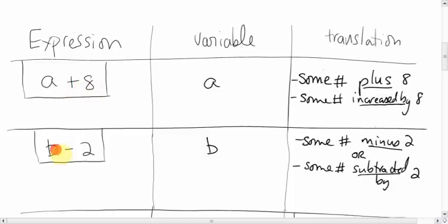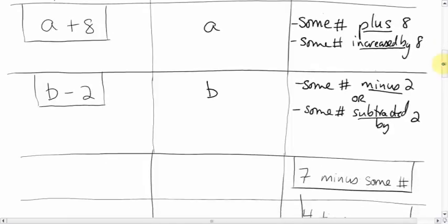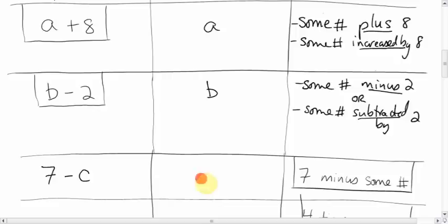With adding, the order doesn't really matter, but for subtracting it does — I'll show you later where you have to be careful about the right order. So for '7 minus some number,' we pick a letter — I'll use C. 7 minus C. We can't flip it around, because in subtracting the order does matter.